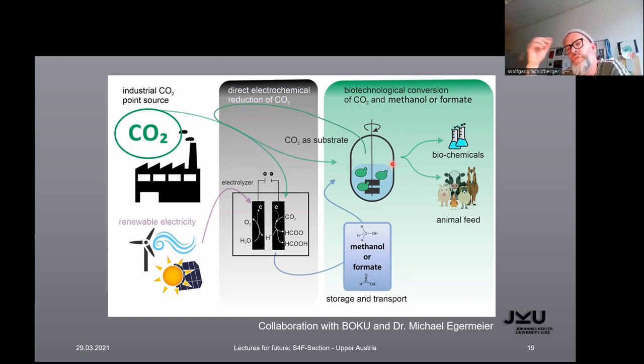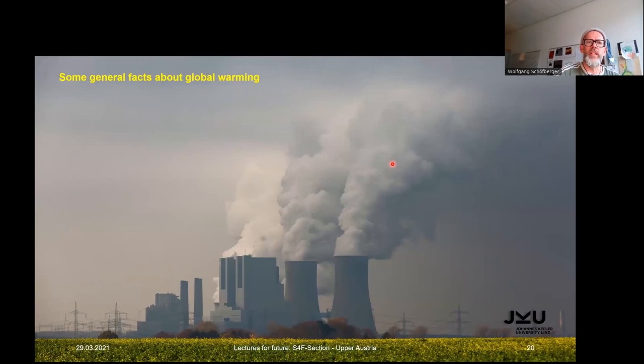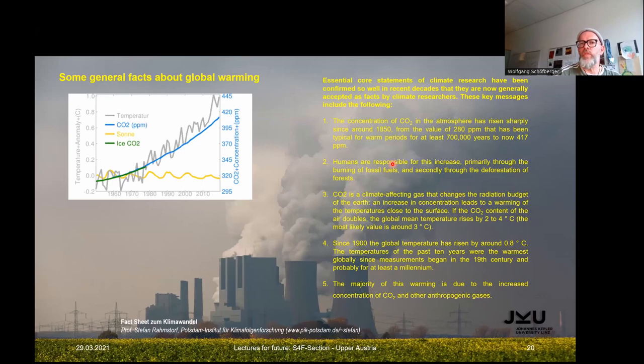This is the collaboration with Dr. Michael Egermeier in future hopefully here at the JKU campus where in this bioreactor is yeast inside. The yeast is specially designed that it deals with methanol or formate, aqueous formate solution. Then the yeast is growing and this yeast can then be isolated, dried, and can be used as animal feed, and then biochemicals also can be extracted from it. Now to some general facts about global warming. The essential core statements of climate research have been confirmed so well in recent decades that they are now generally accepted as facts by climate researchers.